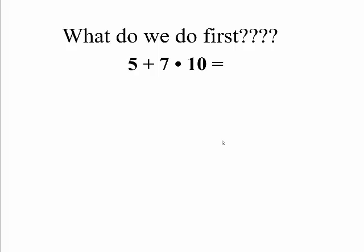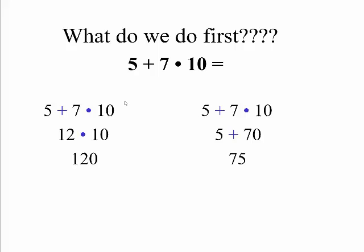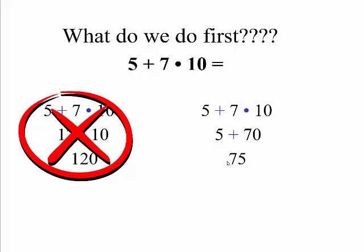Looking at our expression: there's no parentheses, no exponents. Following the order of operations — no P, no E — is there multiplication or division? Yes. So we do the multiplication first. If you do the addition first you'd get 5 plus 7 is 12, times 10 you'd get 120 — that's not right. Doing the multiplication first: 7 times 10 gets me 70, and 70 plus 5 gets me 75. Multiplication first, then addition — that's the correct answer.